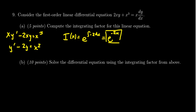This gives us e to the negative 2x times y prime minus 2e to the negative 2x times y, equal to x squared times e to the negative 2x.